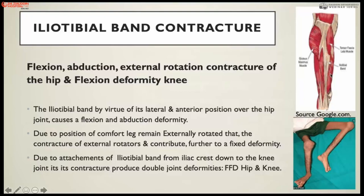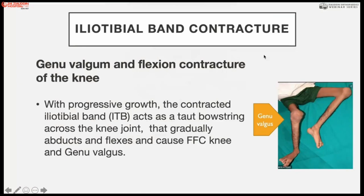The iliotibial band lies anterolaterally around the hip joint, over to the knee joint and onto Gerdy's tubercle. It produces a flexion-abduction-external rotation contracture of the hip joint, and in the chronic phase also produces contracture at the knee joint. Because of the frog-leg position, children develop external rotation around the hip abductors and around the knee joint and tibia. Iliotibial band contractures produce flexion contracture at the hip and knee, as well as genu valgum deformity at the knee.